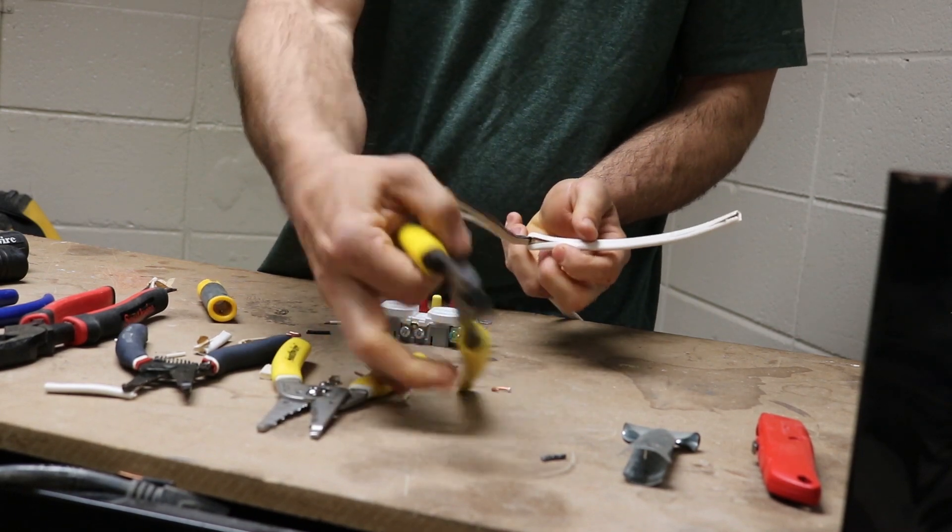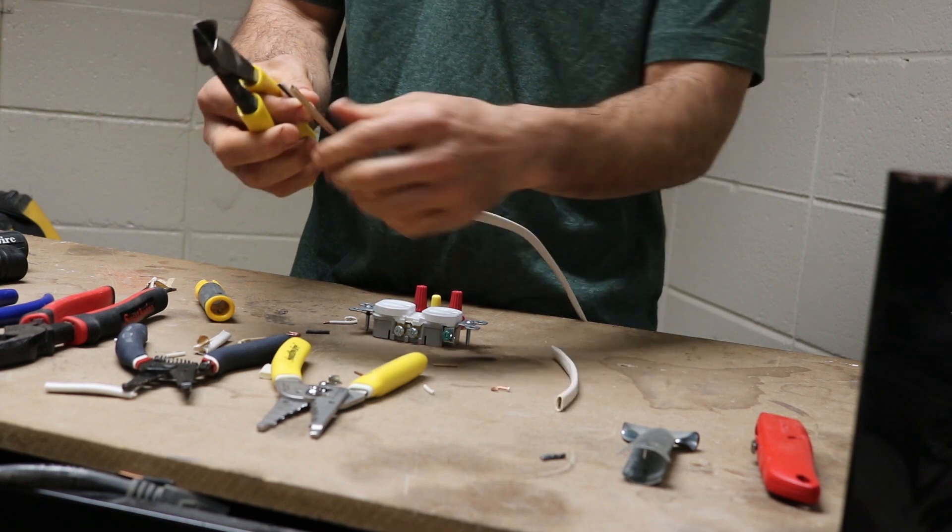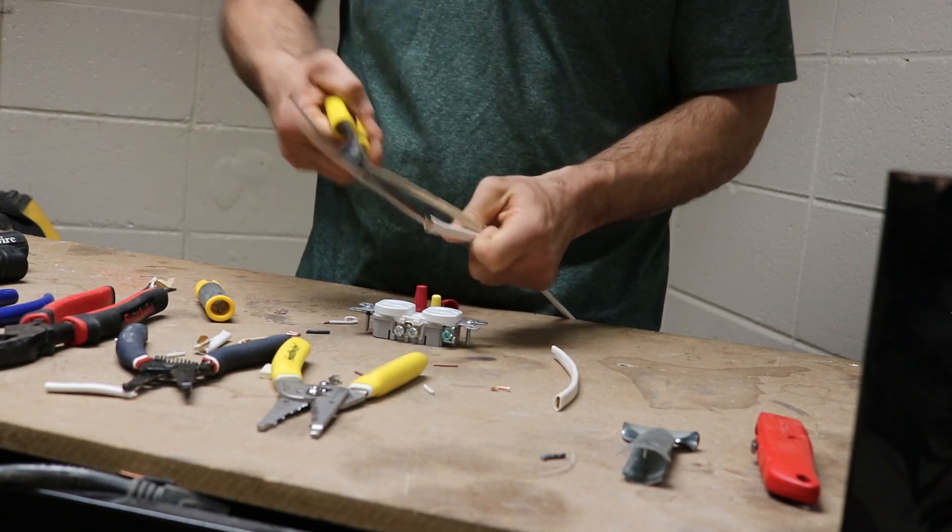After you strip the sheathing off, you can cut away the insulation using your lineman's, using your strippers, or I'm using these diagonal cutters.